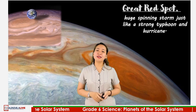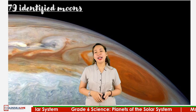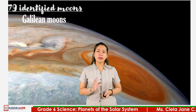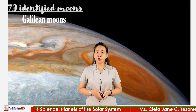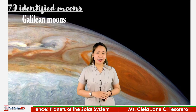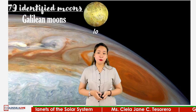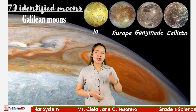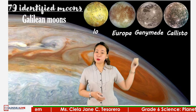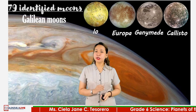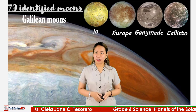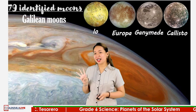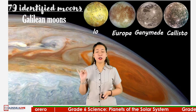Jupiter has a total of 79 identified moons. The four largest are the Galilean moons, named after the discoverer of Jupiter's first moon, Galileo Galilei. These are Io, Europa, Ganymede, and Callisto. Ganymede is the largest moon in the solar system, with a diameter greater than that of the planet Mercury. Jupiter is the fourth brightest object in our skies, after the Sun, Moon, and Venus.